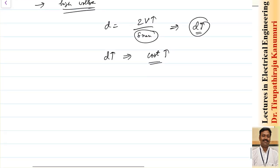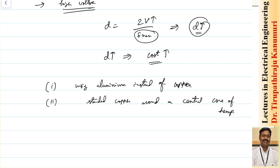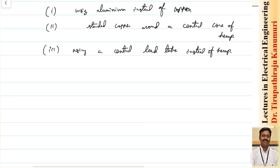The techniques to increase the effective conductor diameter are: first, use aluminum instead of copper — aluminum requires a larger cross-section for the same conductivity, or use ACSR/stranded aluminum conductors; second, for copper, strand the conductor around a central core of hemp to increase diameter; third, use a central lead tube in place of hemp at the center.